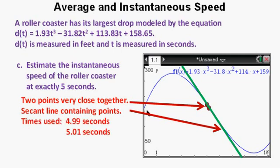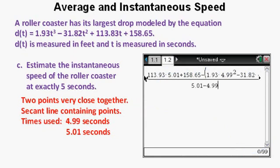To get a very close estimate, we're going to use times of one hundredth of a second lower and one hundredth of a second higher than 5 seconds. So those times will be 4.99 and 5.01 seconds. Here are those time values entered into our calculator.